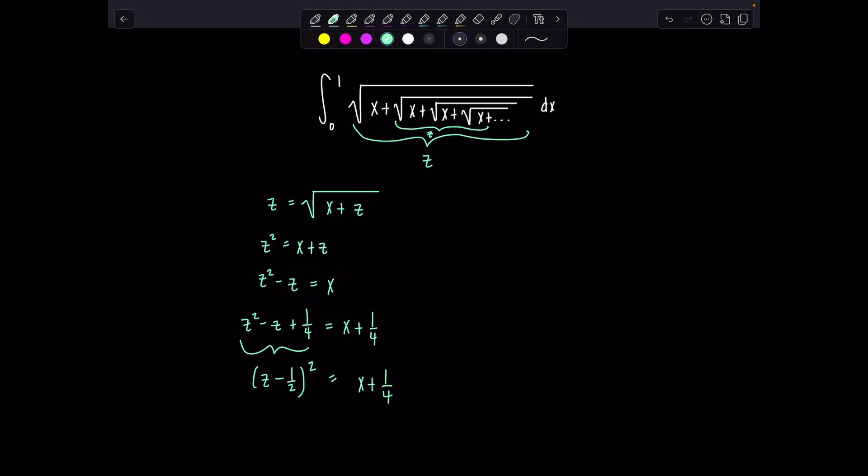So from here if I take the square root of both sides, we have z minus 1 half equals plus or minus the square root of x plus 1 fourth. But obviously this can only take on values that are not negative. If we look here, we're dealing with the principal positive radical. And so at long last, we can say z is equal to 1 half plus the square root of x plus 1 fourth. And that's what I'm going to replace my entire integrand with. So I'm going to replace all of this, which is z, with 1 half plus the square root of x plus 1 fourth.